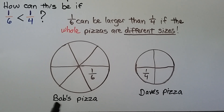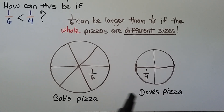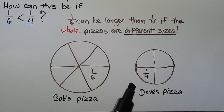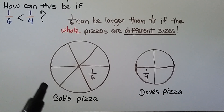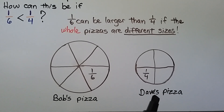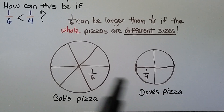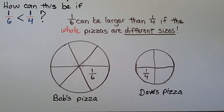Here's Bob's pizza — he has one-sixth of his pizza. Here's Dave's pizza — he has one-fourth. But this pizza is much smaller; he probably ordered an extra-large and the other ordered a small pizza. In this case, the one-sixth is greater than one-fourth because the whole pizza is greater.